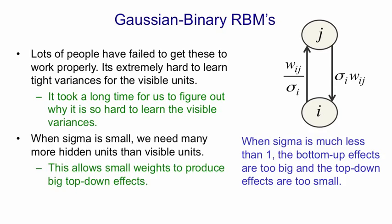So the solution is to have many more hidden units than visible units. That allows small weights between the visible and hidden units to have big top-down effects because there's so many hidden units. But of course, we really need the number of hidden units to change as that standard deviation sigma i gets smaller. And on the next slide, we'll see how we can achieve that.